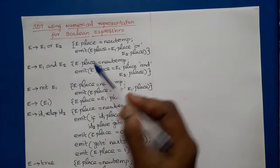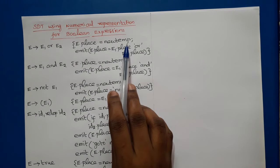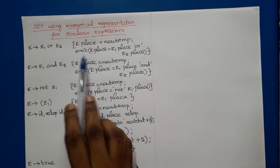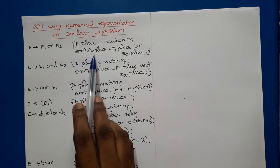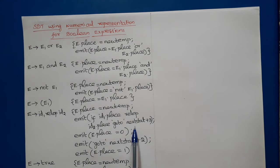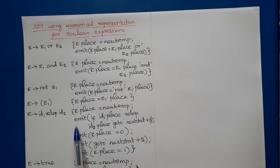Here we have used some functions. new_temp returns a new temporary variable. emit is used for producing three-address statements in an output file. next_stat gives the index of the next three-address statement, and emit increments next_stat after producing each three-address statement.